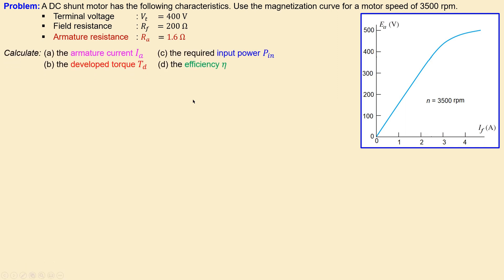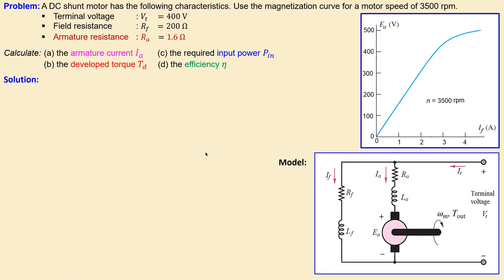We would like to calculate the armature current, the developed torque, the required input power, and also the efficiency of this shunt motor. We begin always with a model — this is our DC shunt motor model, with the field part and also the armature part. This is the terminal voltage where we apply our DC voltage, which is in this case 400 volts.